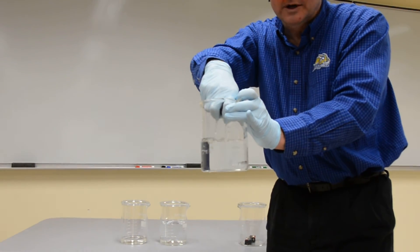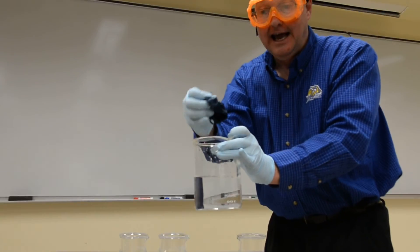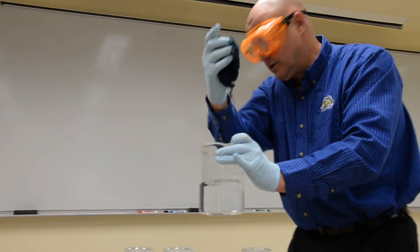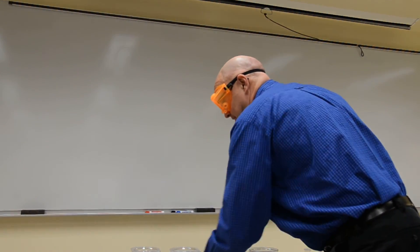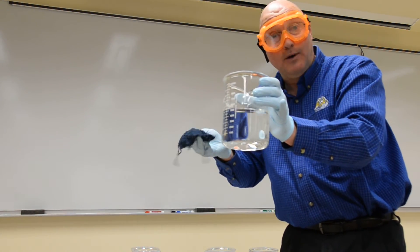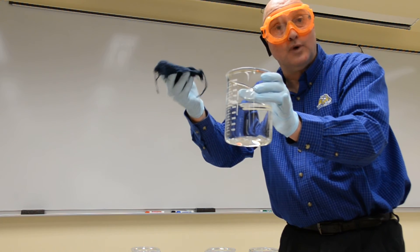I now have turned that Congo red indicator into a blue color. So the question, of course, is can I get the red color back? And the answer is yes. What I'm going to do is I'm going to take the blue cloth and I'm going to submerse it in, of course, the opposite.